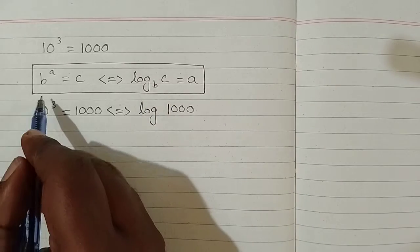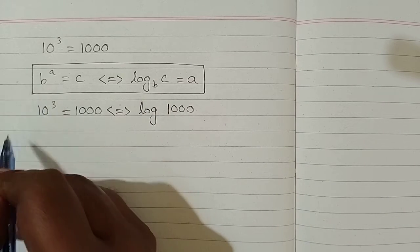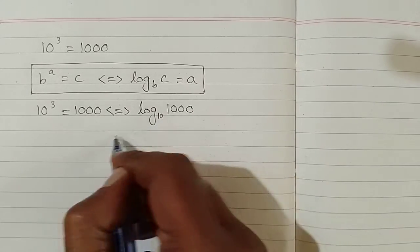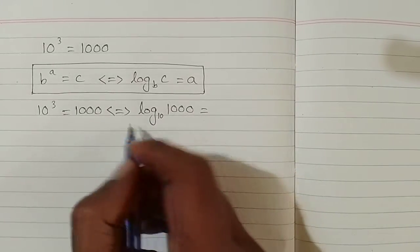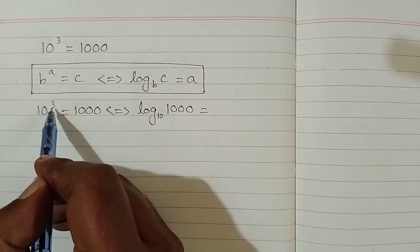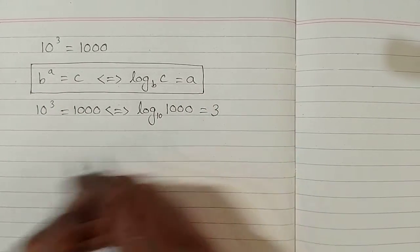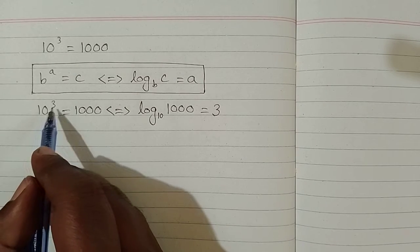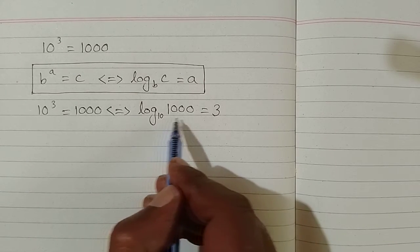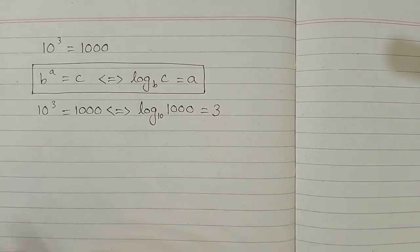In place of b we can see that we have 10, so we will write 10 as the base of log. And in place of a we have 3, so we will write 3. Therefore, 10 raised to the power 3 is equal to 1000 can be written as log of 1000 base 10 is equal to 3.